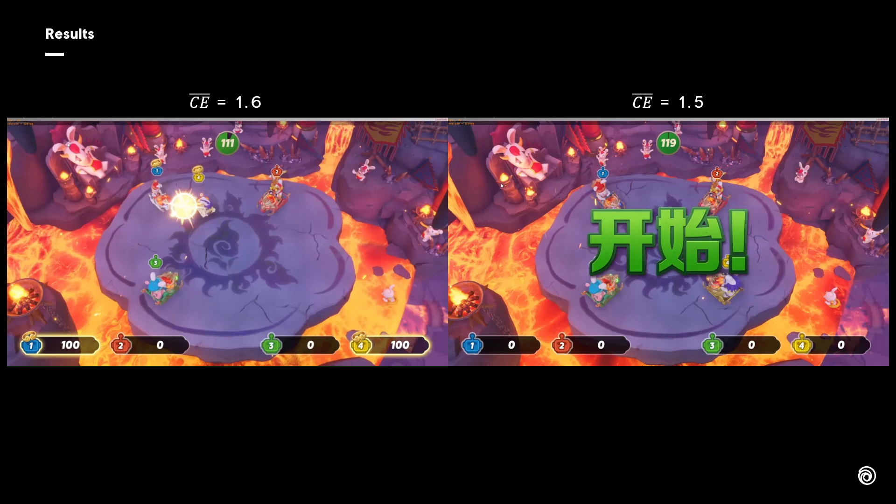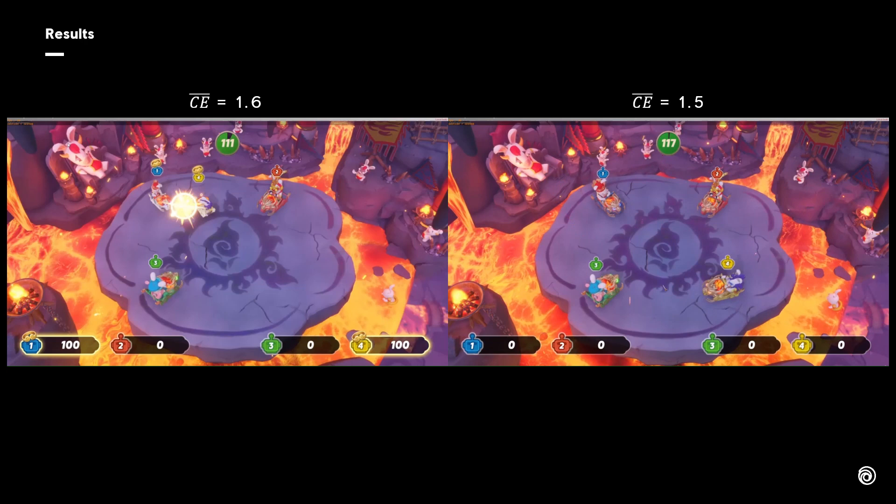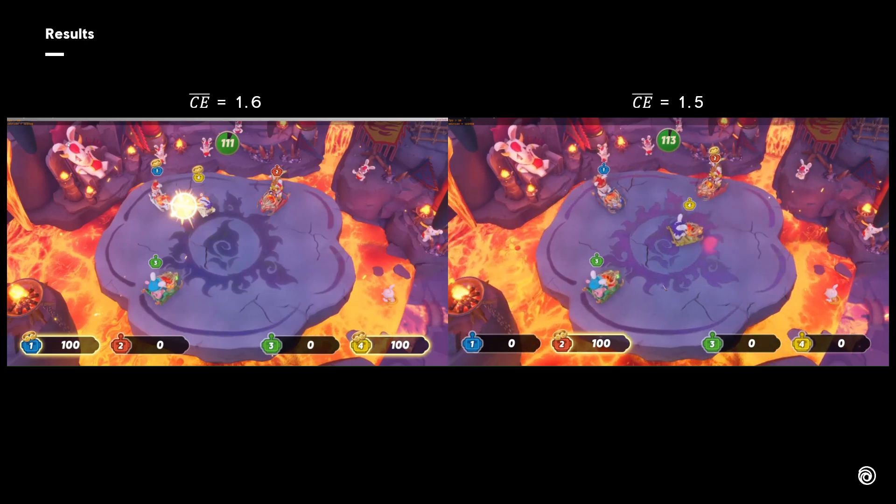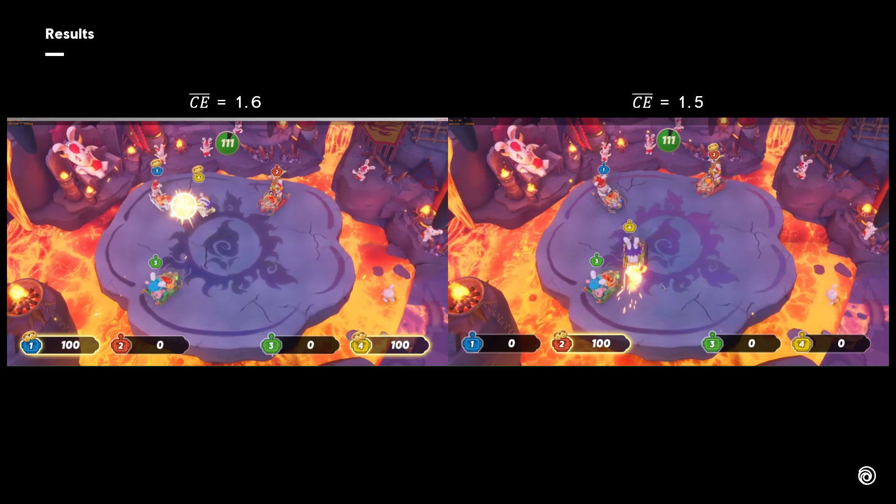When we decrease the expected cross entropy value to 1.5 to strengthen the imitation task, we can see that car number 4 navigates back in a half circle before hitting car number 1.